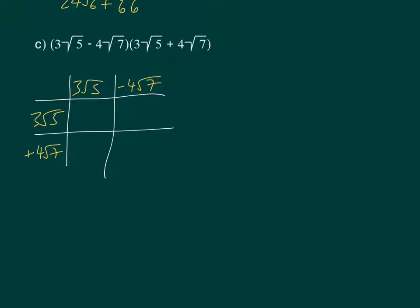So 3 times 3 is 9. Root 5 times root 5 is root 25. And then 3 root 5 times minus 4 root 7 is minus 12 root 35. And these two is going to give us 12 root 35. And then the last one, minus 4 times 4 is minus 16 times root 49.